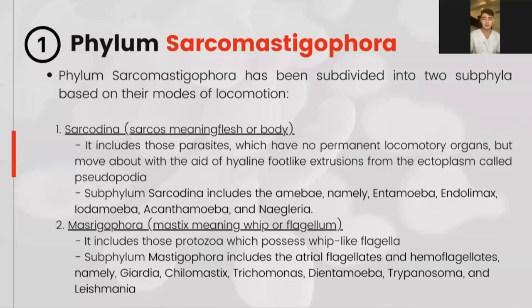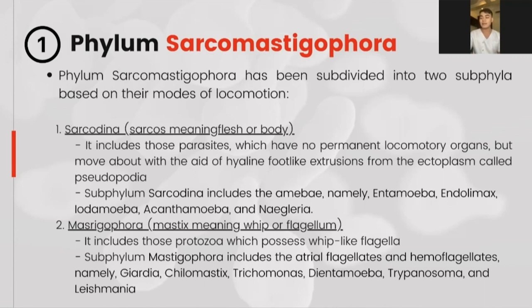Phylum Sarcomastigophora has been subdivided into two subphyla based on their modes of locomotion: the Sarcodinas and the Mastigophorans. For Sarcodinas — sarcos meaning flesh or body — it includes parasites which have no permanent locomotory organs but move about with the aid of hyaline foot-like extrusions from the ectoplasm, which we refer to as pseudopodia or false feet. Subphylum Sarcodina includes the amoebas: Entamoeba, Endolimax, Iodamoeba, Acanthamoeba, and Naegleria. For Mastigophora — mastics meaning whip or flagellum — it includes protozoans which possess whip-like flagella, including atrial flagellates and hemoflagellates: Giardia, Chilomastix, Trichomonas, Dientamoeba, Trypanosoma, and Leishmania.